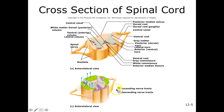Don't worry so much about the tracks picture — it's just talking about ascending and descending tracks, meaning bundles of nerves that are moving up and down the spinal cord.